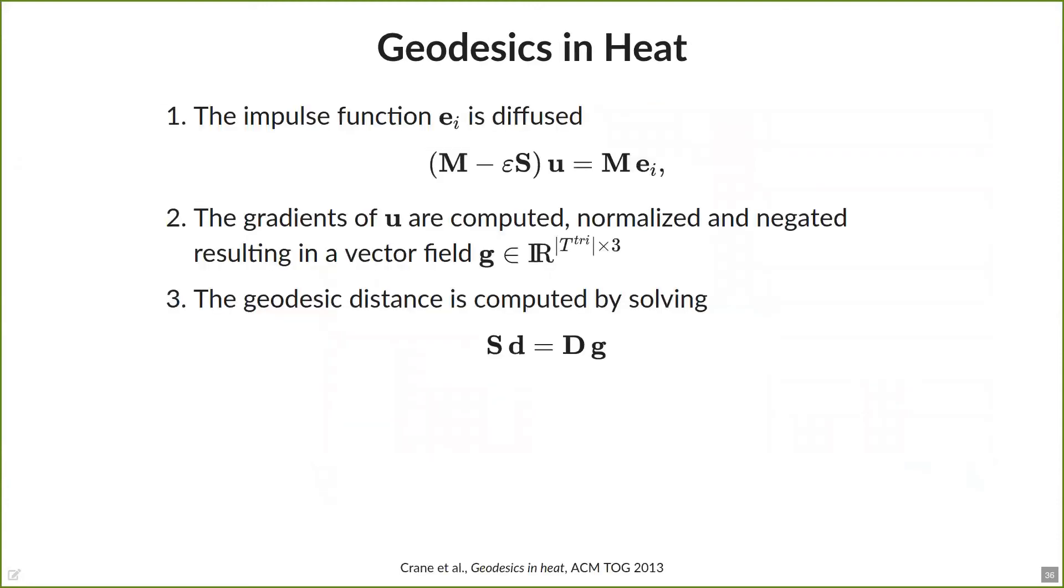The last method we are going to show you is the computation of the geodesic distances with the help of the heat flow, developed by Crane et al. This method involves three major steps. At first, we smooth the impulse function with a certain time step epsilon, which is recommended to be the mean edge length of the mesh. Afterwards, we compute the gradients of the solution with the help of the gradient operator I mentioned before. To obtain the geodesic distances, we solve for a scalar field whose gradient matches the vector field g the best. For this, we need the divergence operator. And in practice, the results look like this.